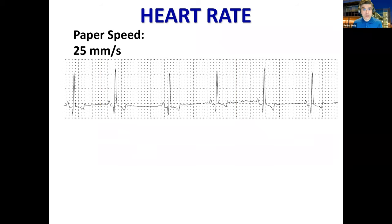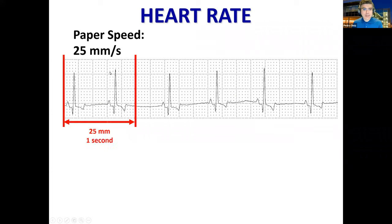Let's take a closer look at this specific trace. If the speed is 25 millimeters per second and every little square is 1 millimeter, then counting 25 of those tiny ones gives you 1 second. To make it easier, you can count in bunches of 5: 5, 10, 15, 20, 25 little boxes — so in 25 little boxes, or 25 millimeters, you have 1 second.